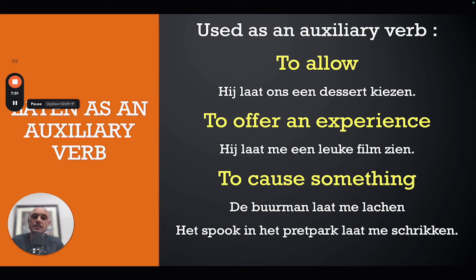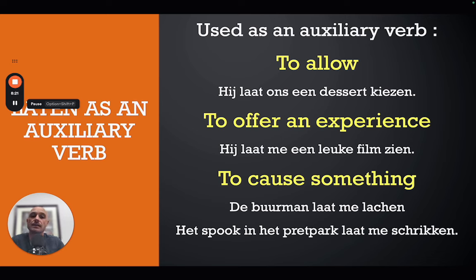The fourth auxiliary meaning is 'to offer an experience.' This is most often used with verbs related to the senses — like 'zien' (to see), 'horen' (to hear), 'ruiken' (to smell). For example, 'hij laat me een leuke film zien' literally means 'he lets me see a nice movie' — he offers me the experience of watching a nice film.